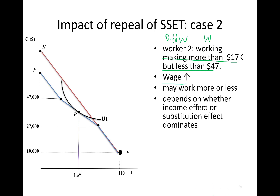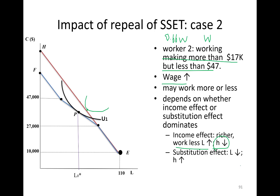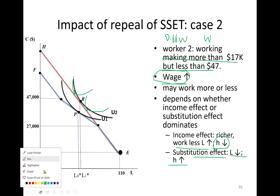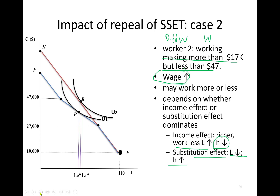Income effect says wages went up, you feel richer, work less — leisure goes up, hours of work decline. Substitution effect says leisure is more expensive, consume less leisure, work more. Worker three initially earning more than $47,000 jumps to a definitely higher indifference curve — this is a pure income effect, because wages are exactly the same. In plain terms, this worker was losing $10,000 per year in Social Security benefits for working hard past retirement age. The new system restores that $10,000. Income effect: take it easy — leisure goes up, hours of work go down.